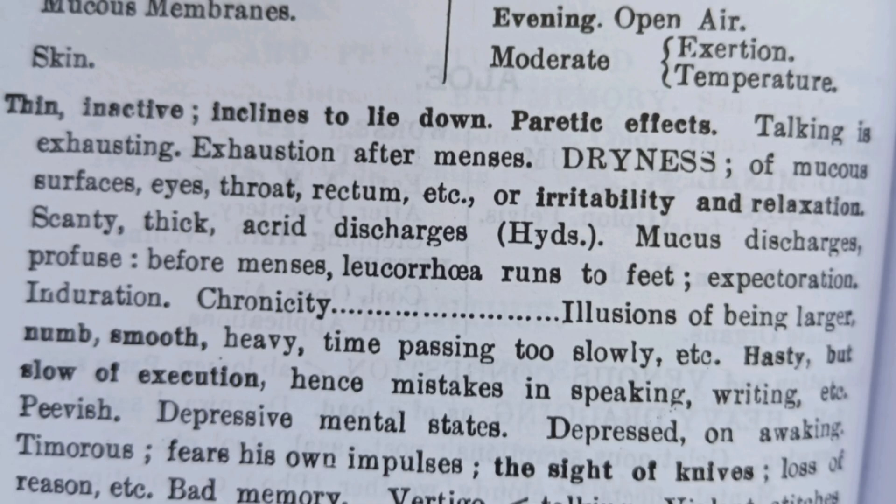In Boger Synoptic Key, the first line of Alumina is: thin, inactive, inclines to lie down, paralytic effects. This line is given in bold because it is an important line. Next, dryness is given in capitals because Alumina generally produces dryness in the whole body — in the mucous membranes, eyes, throat, rectum, etc. Bryonia also has dryness; Alumina is the chronic remedy of Bryonia. Alumina produces dryness in mucous membranes, or irritability and relaxation. This is why the discharges of Alumina can be scanty, thick, acrid like Hydrastis, or profuse like Leucorrhea.